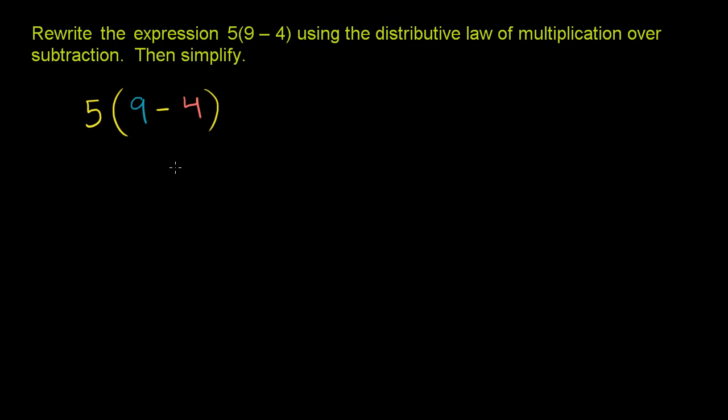Now, if we want to use the distributive property, you don't have to. You could just evaluate 9 minus 4 and then multiply that times 5. But if you want to use the distributive property, you distribute the 5. You multiply the 5 times the 9 and the 4.